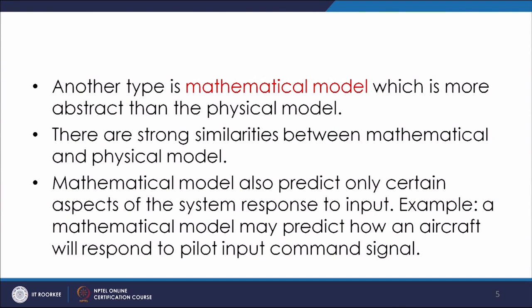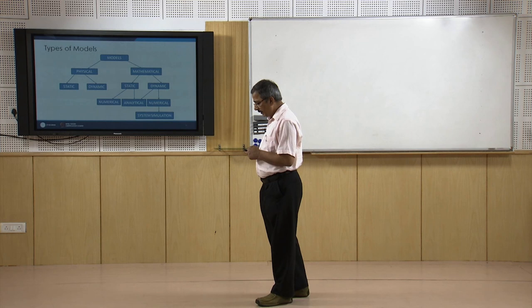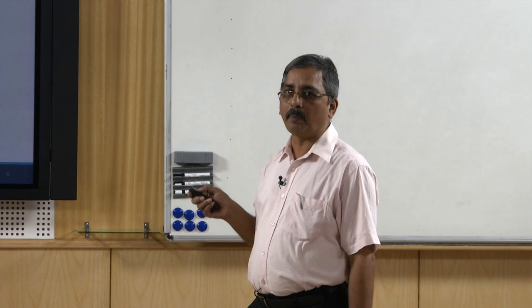Another type of model is the mathematical model, which is more abstract than the physical model. There is a strong similarity between the physical model and the mathematical model, and mathematical models also predict certain aspects of the system response when subjected to an input. For example, for an aircraft, a mathematical model may predict how the aircraft will respond to pilot input command signals.